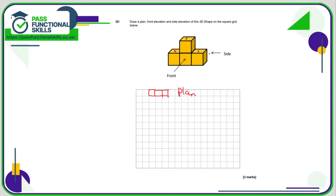From the side, all you would see is this square and this square, so that's what it would look like from the side. And from the front, all we would see is one, two, three, four — so that would be three along the bottom and one on the top in the middle. So that would be the front.